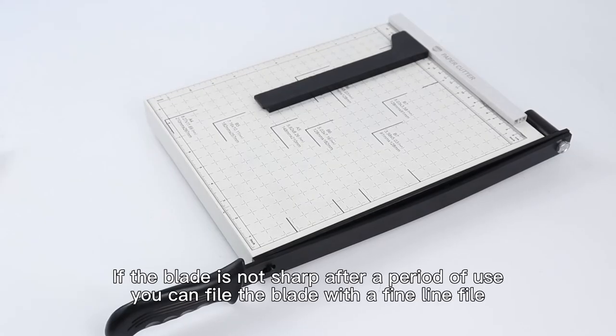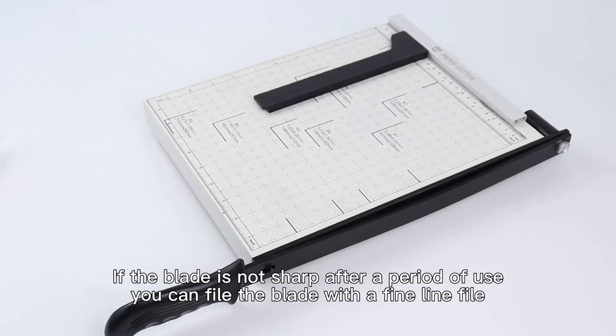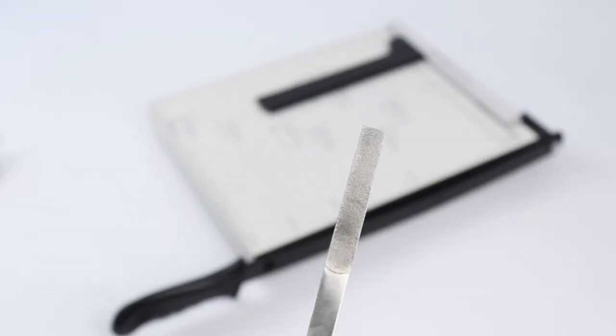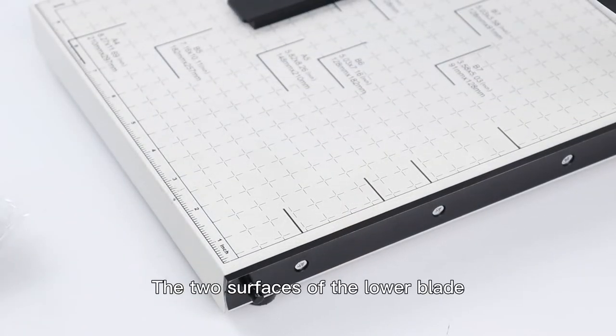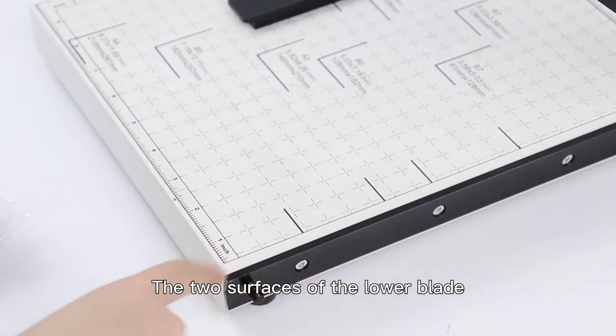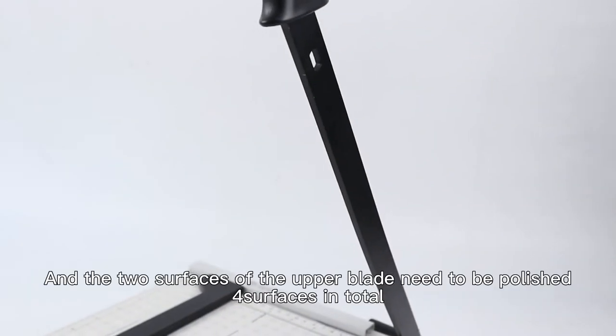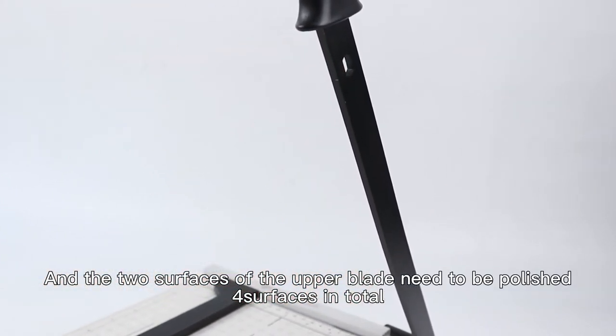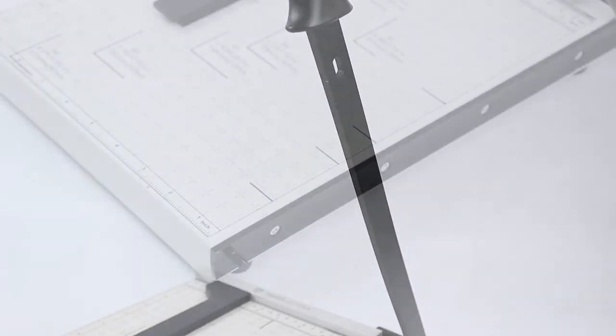If the blade is not sharp after a period of use, you can file the blade with a fine line file. The two surfaces of the lower blade and the two surfaces of the upper blade need to be polished. Four surfaces in total.